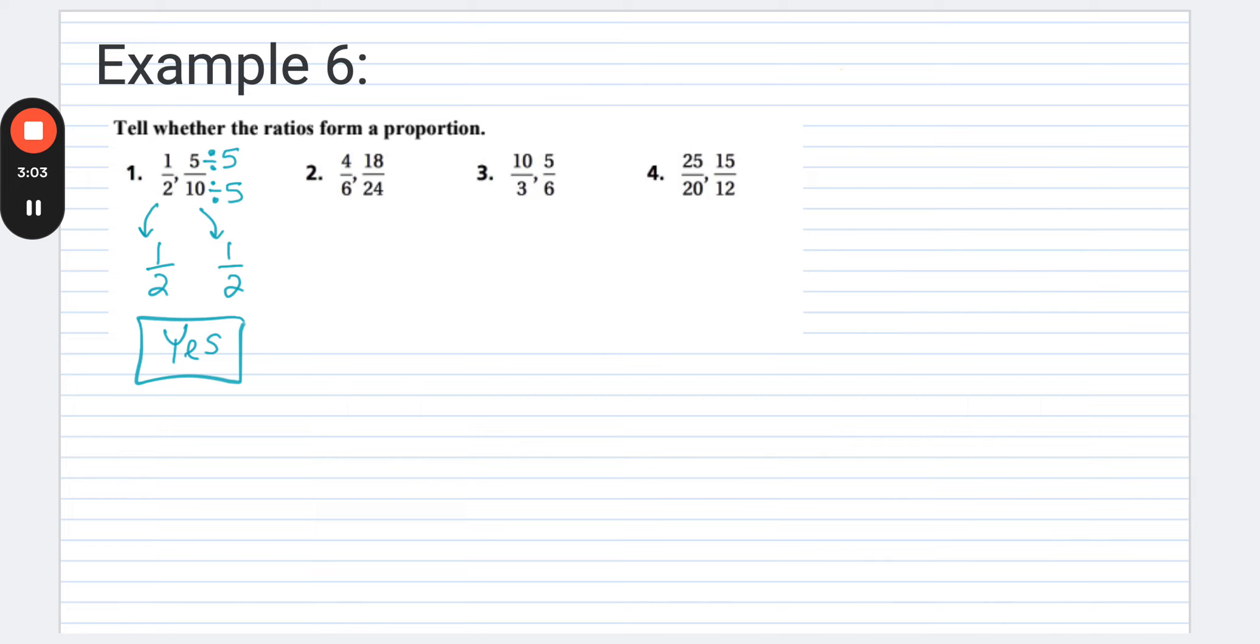All right. So now for the next one, we got four to six and we're comparing that to the 18 to 24. So if we were to go through and simplify each of these, four to six is going to simplify to two thirds. So dividing both of those by two and then 18, 24, so you can divide each of those by six. That gets us three fourths. So those now are both in their most simplified forms. They are not the same. And so we're going to conclude on this one that no, they are not in a proportion.